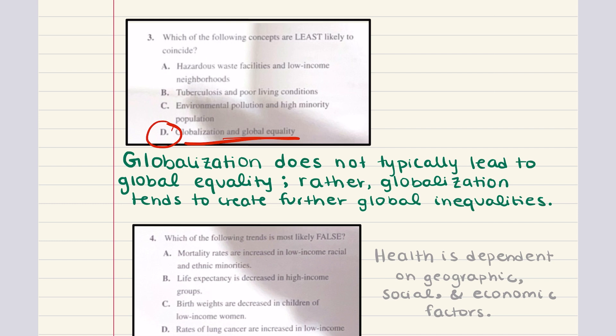Just to review: in regards to environmental justice, higher numbers of hazardous waste facilities tend to be found in low income neighborhoods — that's choice A. Poor living conditions tend to be associated with greater health problems including tuberculosis — that's choice B. Environmental pollution is more prevalent in areas with minority populations, especially low income minority populations — that's choice C. So A, B, and C all coincide, but not D. Hence the correct answer for three is D.